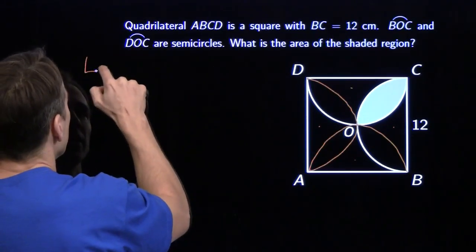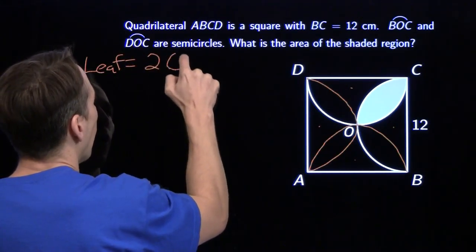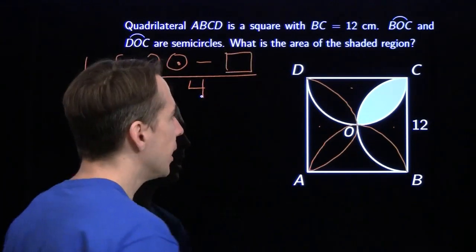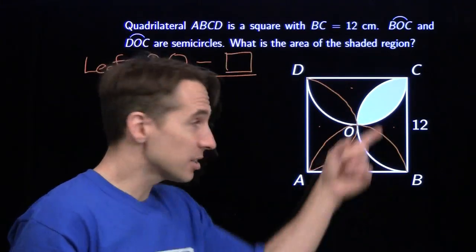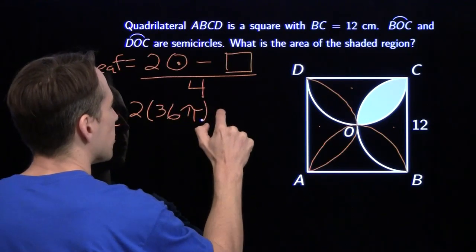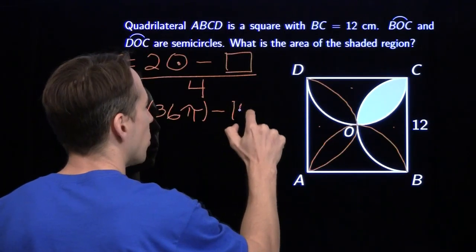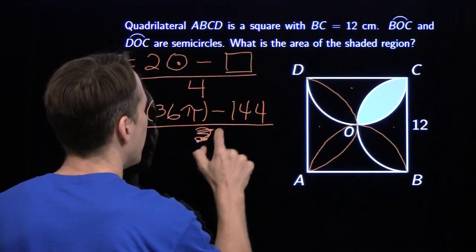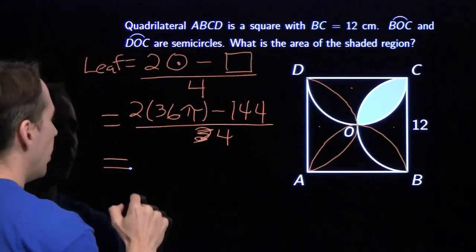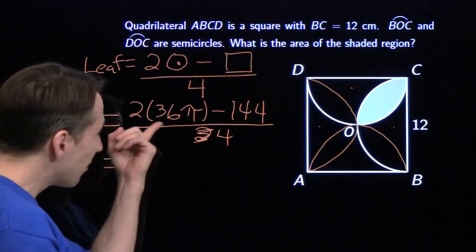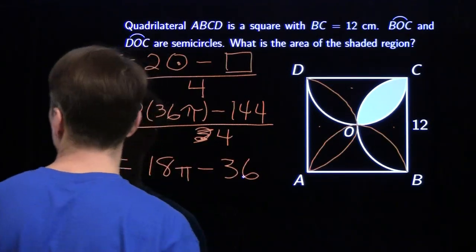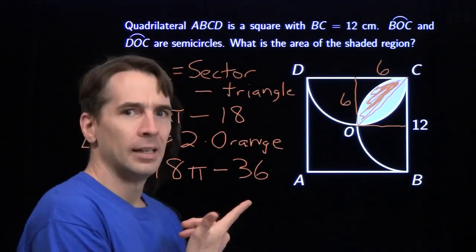Let's write our plan down: the leaf equals two whole circles minus the big square, divided by four. Each of these circles has radius 6 — twelve is the diameter, radius is six, area is 36π. So two circles give 72π. Subtract the area of the large square, which is 144, and divide it all by four. That gives us 18π minus 36. Sure enough, the same answer as last time. That's really slick — this guy freaks me out sometimes.